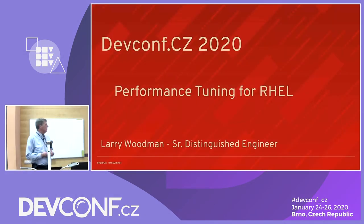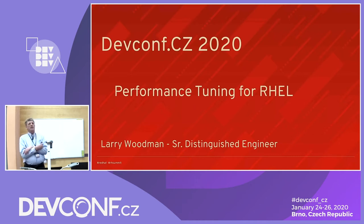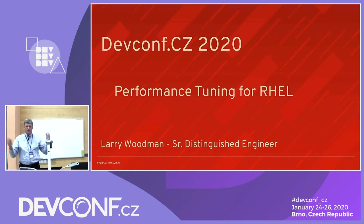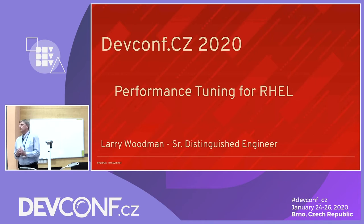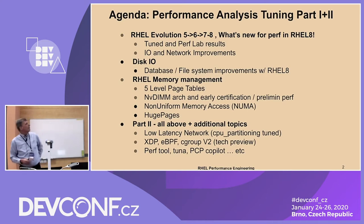My name is Larry Woodman. I'm an engineer in the RHEL kernel group, and I have been for about 18 years. If there's anything you don't like that I say, my boss is right there, so throw tomatoes at him and not me. This presentation is an overview — we've given it multiple times. There's a lot of complexity in tuning the kernel and all the parameters associated with it, so this is by far an overview. It tells you how we do it and gives you pointers to resources so you can get involved yourself.